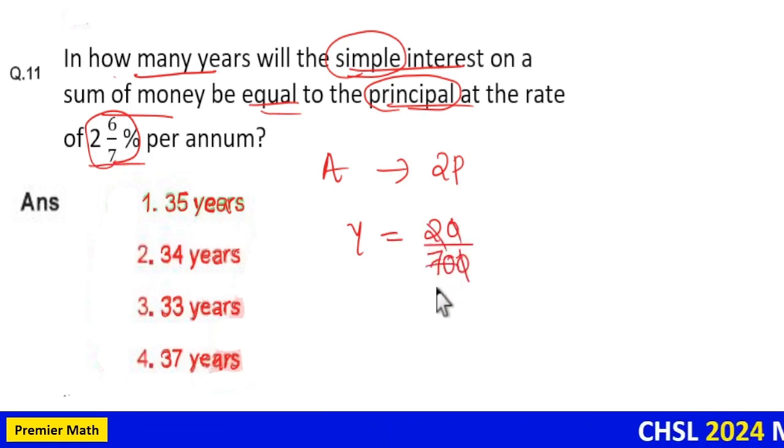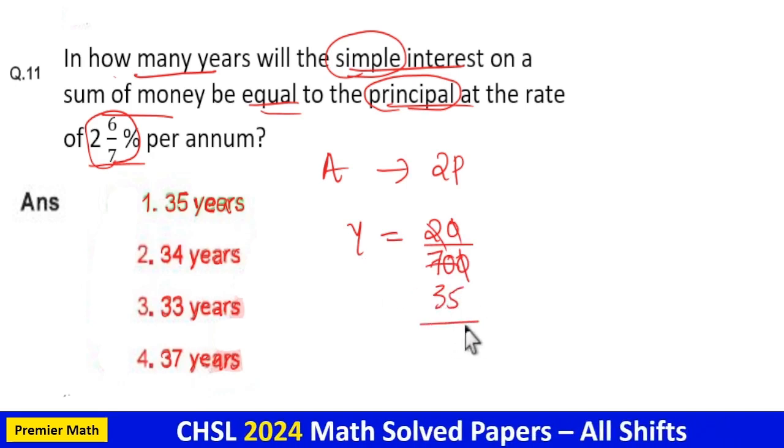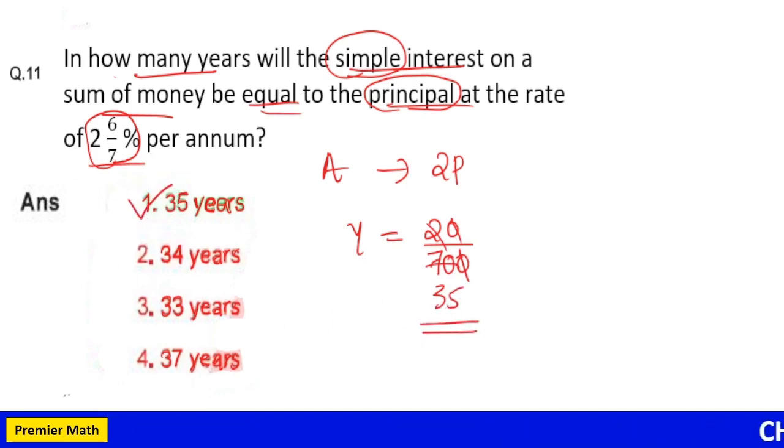So here 2 goes 35 times in 70 means y is equal to 35 years. Option 1 is your answer.